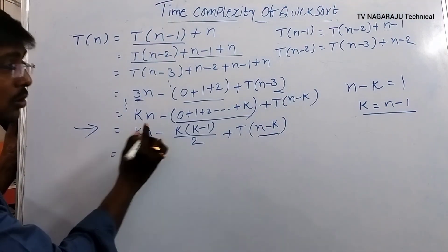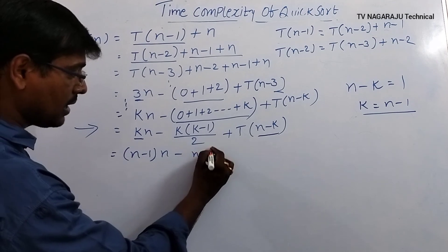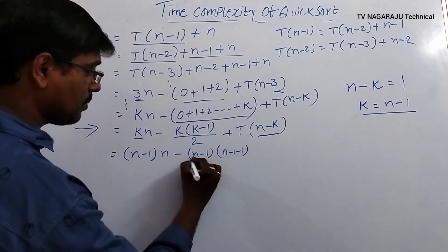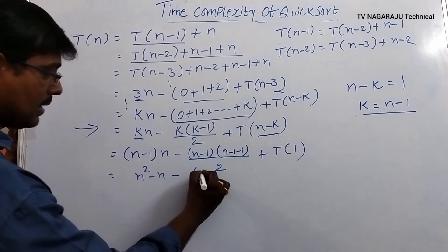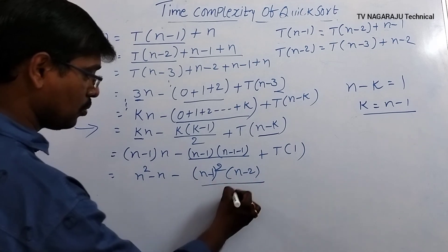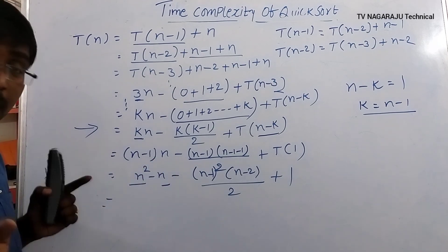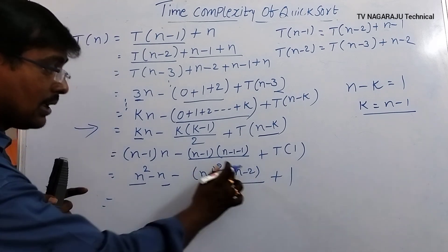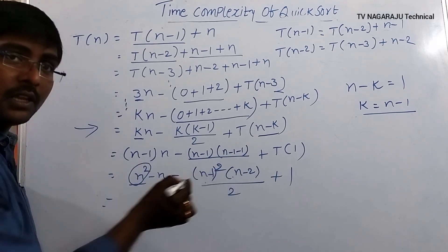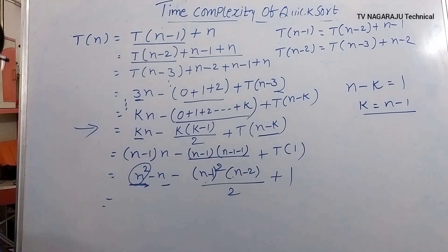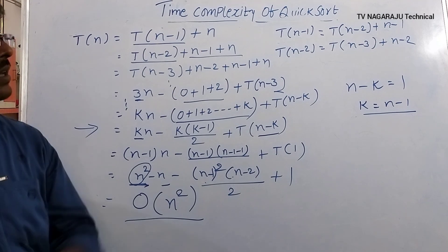Expanding: T(n) = n(n−1) − (n−1)(n−2)/2 + 1. The highest degree term is n², so among all terms the maximum time complexity is n². Therefore, the time complexity of the quicksort algorithm in the worst case is O(n²).